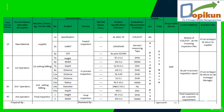Control plan sample for form filling. First column — part or process number, listed as serial numbers 10, 20, 30. Second column — process name or operation description. This column covers planning of all operations from raw material to finished product. Machine, device, jig, or tool used for manufacturing process will be listed under this column. Specifications and tolerance — if any specific characteristic is required on the product.